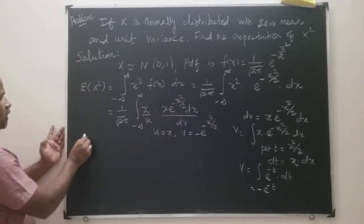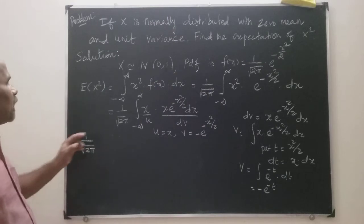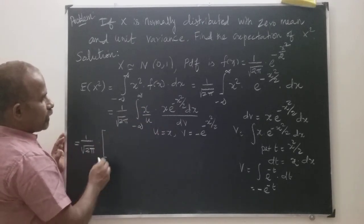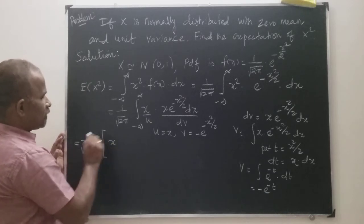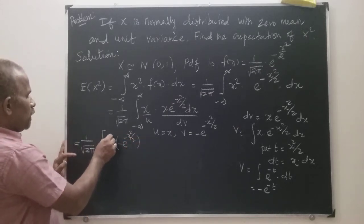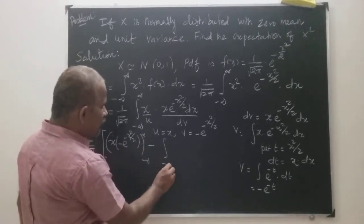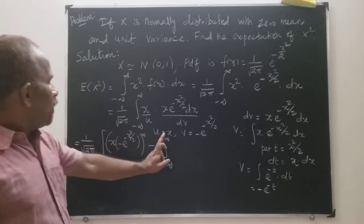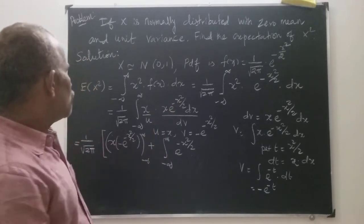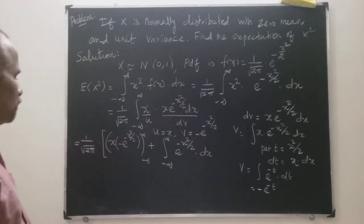Now, integration by parts: this equals 1 by square root of 2π. The formula is: integral u dv = uv minus integral v du. Here u = x and v = minus e to the power minus x squared by 2. The limit varies from minus infinity to plus infinity. So we have: minus integral from minus infinity to plus infinity of e to the power minus x squared by 2 into v du, where du = dx.